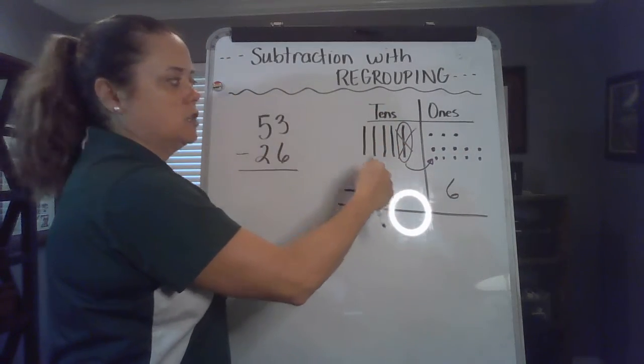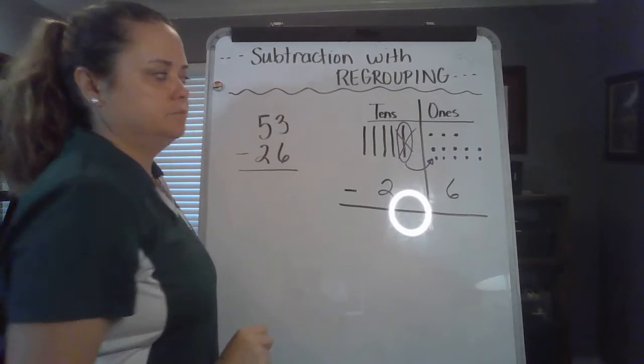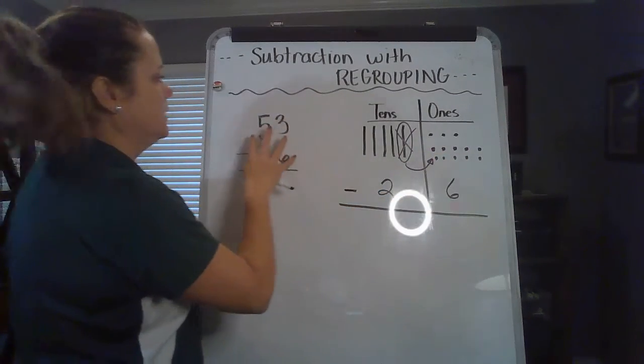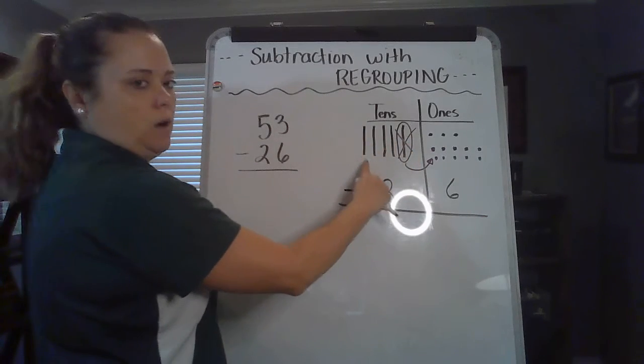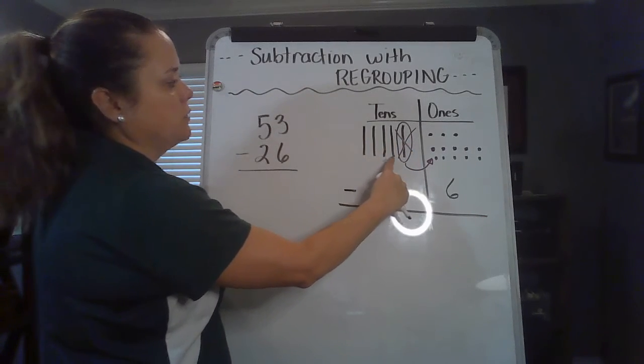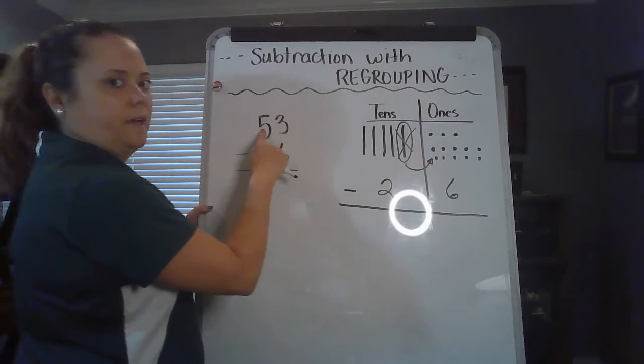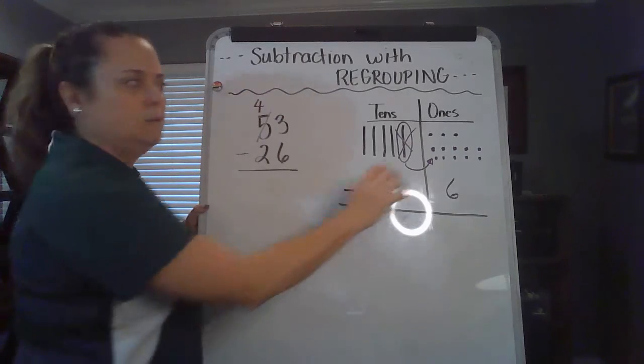So what does that look like here? What we just did, what does that look like here? What it looks like is we don't have five tens anymore. Now we have 1, 2, 3, 4, or 10, 20, 30, 40. So this five becomes a four.